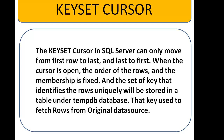The set of keys that identifies the rows uniquely will be stored in a table under the tempdb database. Only the unique keys are stored, and those keys are used to fetch rows from the original data source. While fetching the cursor, the key from the tempdb database will fetch the original data from the data source.